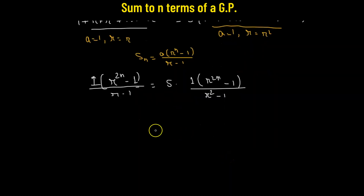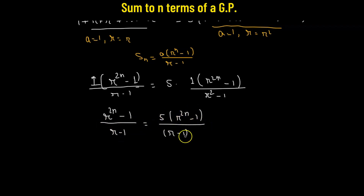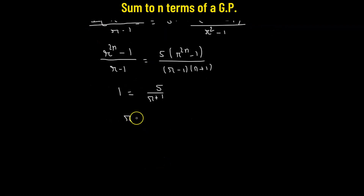Simplifying further: (r^(2n) − 1)/(r − 1) equals 5 times (r^(2n) − 1)/(r² − 1). Since r² − 1 = (r − 1)(r + 1), we cancel (r^(2n) − 1)/(r − 1) from both sides, giving 1 = 5/(r + 1). Cross-multiplying gives r + 1 = 5, so the common ratio r equals 4.